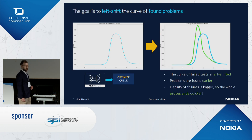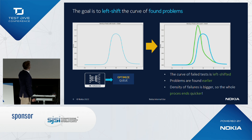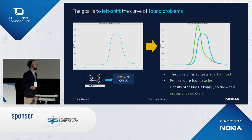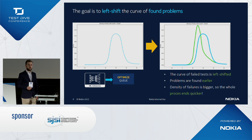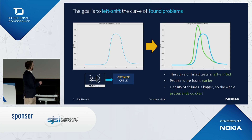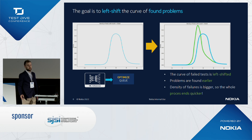The final goal is to left-shift the curve of found problems to the left. If you look at the left side of the slide, there's a chart describing the average density of failures in the regression testing at the company. The distribution resembles a normal distribution — also called a Gaussian distribution — which is interesting because it models most situations in life and has advantages related to mathematics.